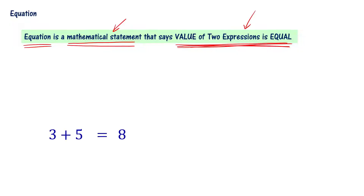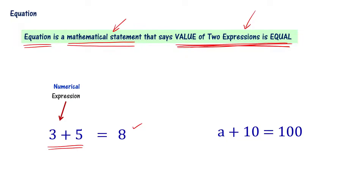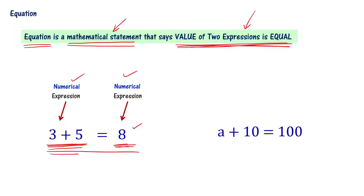For example, 3 plus 5 equal to 8 is an equation. A plus 10 equal to 100 is also an equation. In '3 plus 5 equal to 8', the expressions 3 plus 5 and 8 are both numerical expressions — numbers are used. That is, two numerical expressions are equated to form the equation. Now, 'a plus 10' is an algebraic expression.